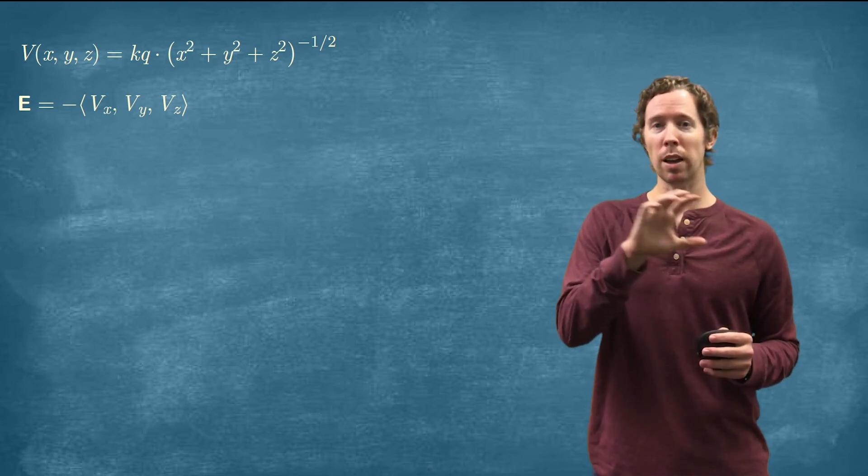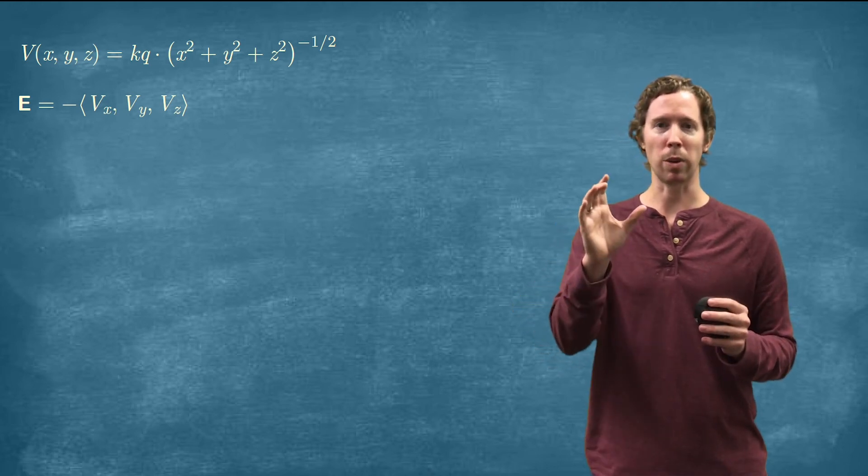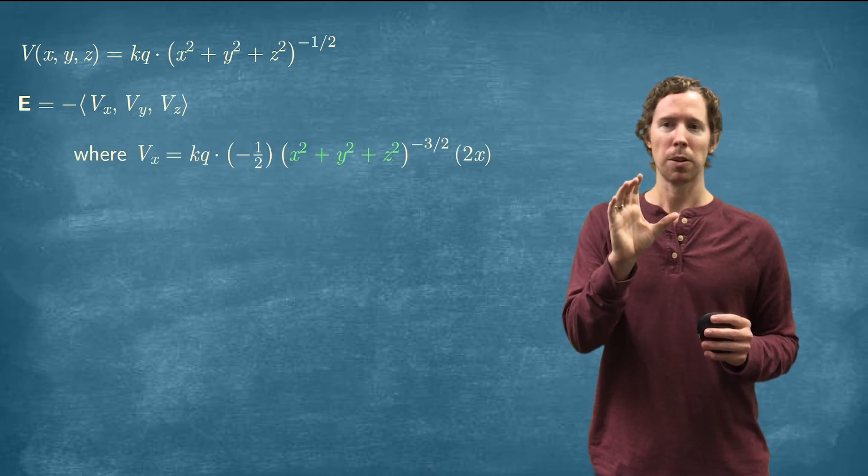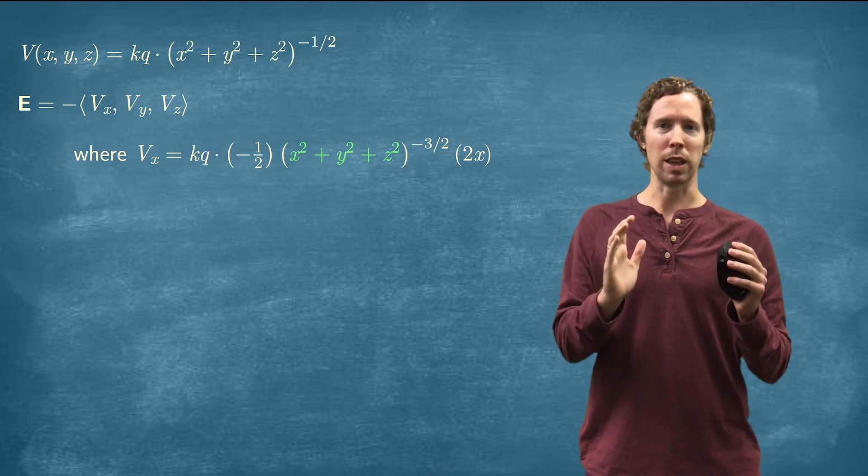So bring the negative one half power down in front. Then you've got the stuff in parentheses raised to the minus one half minus one, so that's negative three halves. And then you have to multiply that by the derivative of the inside.